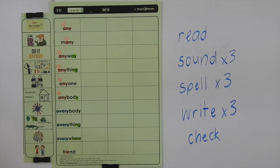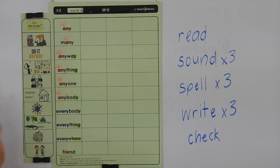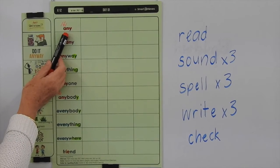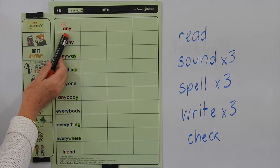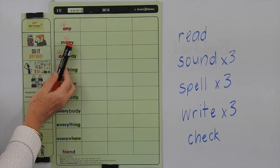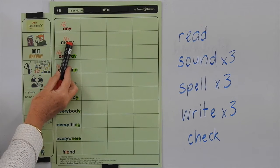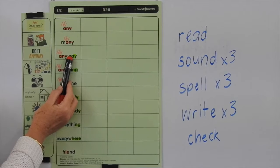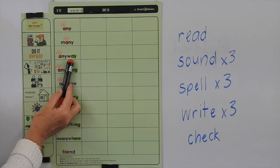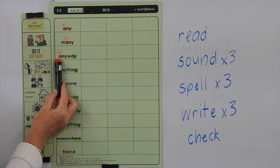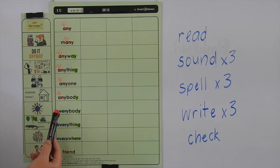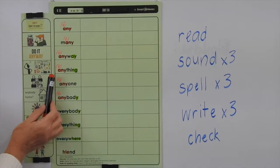So let's have a look at what these words mean. 'Any' means one or some of a thing, or it could mean a number of things, or no matter how much or how many you have of something. 'Many' means lots of things. 'Anyway' — you probably use that when you're speaking to someone to support a point of view you're trying to make, or to change a subject, where you might say, 'Oh anyway, let's get going on something' — you're changing the conversation.